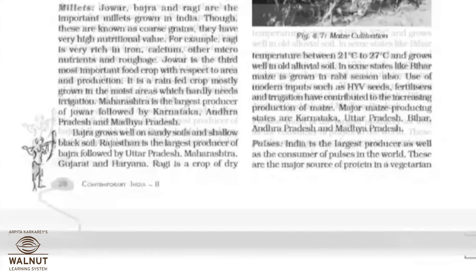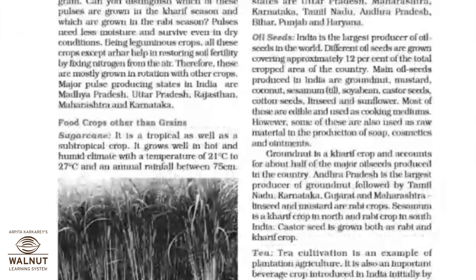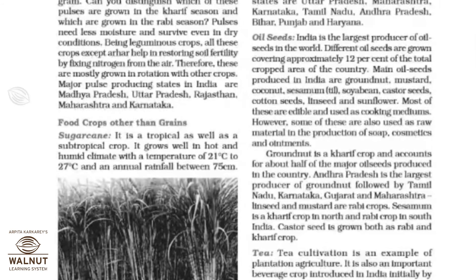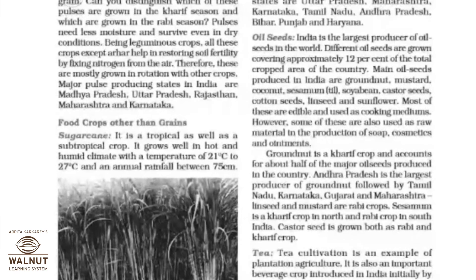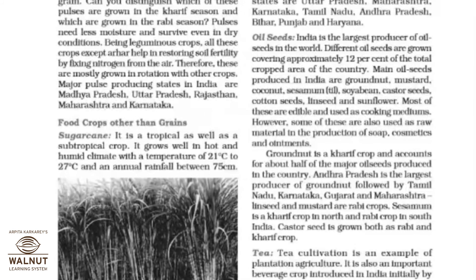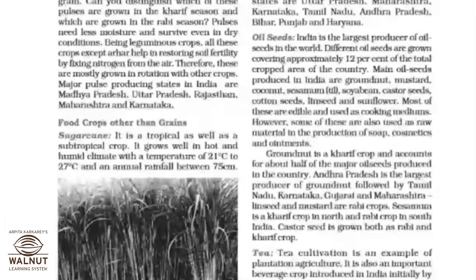Next crop is pulses. India is the largest producer as well as consumer of pulses in the world. These are the major source of protein in a vegetarian diet. Major pulses grown in India are arhar, urad, moong, masur, peas, and gram. Can you distinguish which pulses are grown in the kharif season and which are grown in the rabi season? Pulses need less moisture and survive even in dry conditions. Being leguminous crops, all these crops except arhar help restore soil fertility by fixing nitrogen from the air. Therefore, these are mostly grown in rotation with other crops. Major pulse producing states are Madhya Pradesh, Uttar Pradesh, Rajasthan, Maharashtra, and Karnataka.